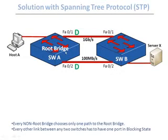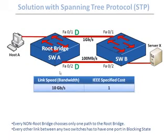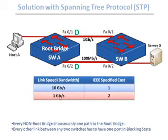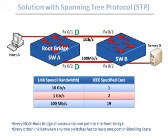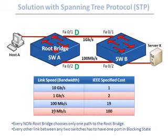After selecting the root bridge, every non-root bridge selects a single path to the root bridge and blocks every other path. The path to the root bridge is selected by cost, and the lowest cost wins. Cost is a value associated with interface bandwidth: 10 Gbps = cost 1, 1 Gbps = cost 2, 100 Mbps = cost 19, 10 Mbps = cost 100.